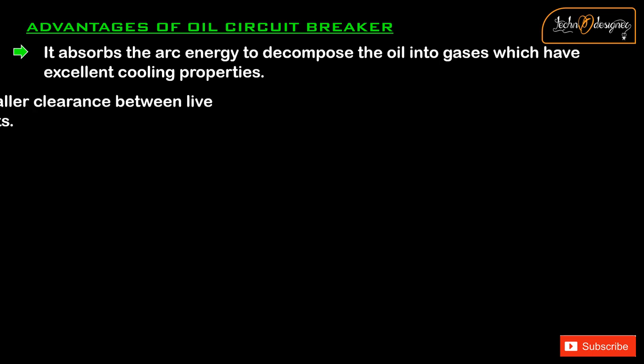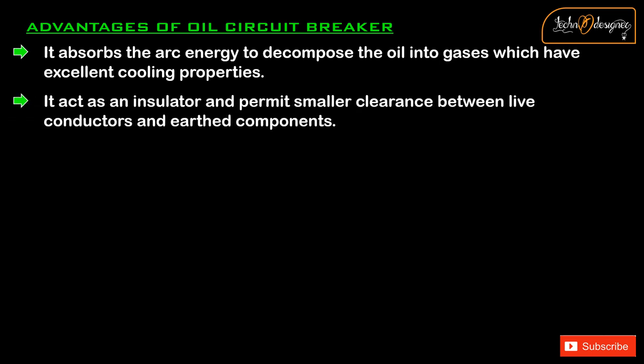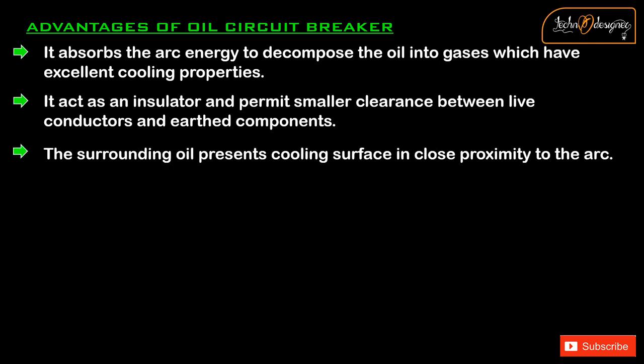Advantages of oil circuit breaker: It absorbs the arc energy to decompose the oil into gases which have excellent cooling properties. It acts as an insulator and permits smaller clearance between live conductors and earthed components. The surrounding oil provides a cooling surface in close proximity to the arc.